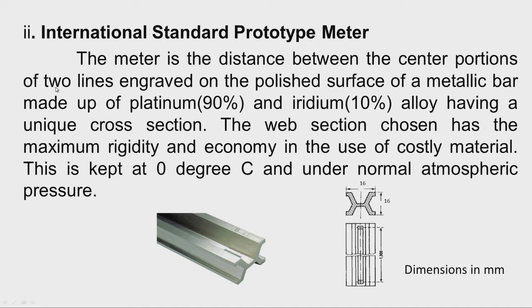Another line standard is the international standard prototype meter. A special cross section is used with dimensions of 16 mm × 16 mm. This surface is at the neutral axis and two lines are engraved on this surface. The distance between these two lines is taken as 1000 mm or 1 meter. The material is 90% platinum and 10% iridium, and it is kept at 0 degrees Celsius and normal atmospheric pressure. This is used for comparing other measurement standards.